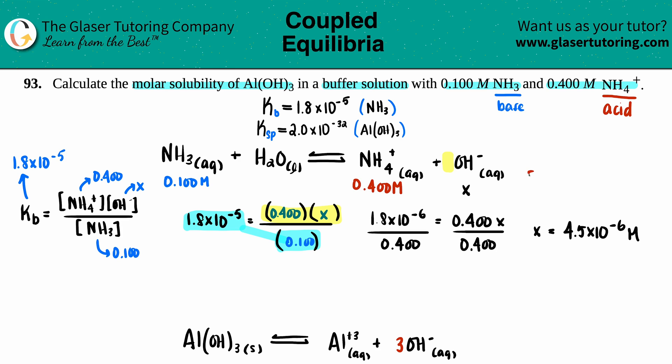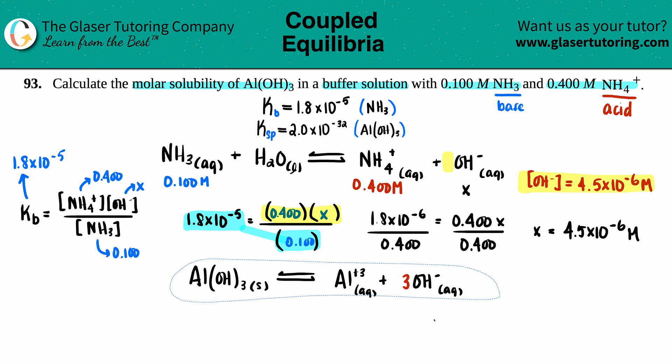The x was the OH⁻, so we now know that we have a hydroxide concentration of 4.5 × 10⁻⁶ molarity, and I'm going to use that information to plug in to the other equation. This one's now coming up.